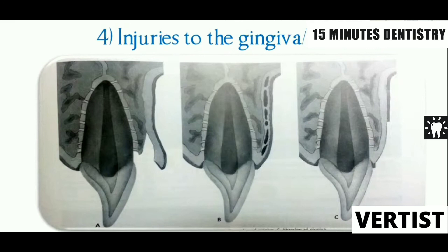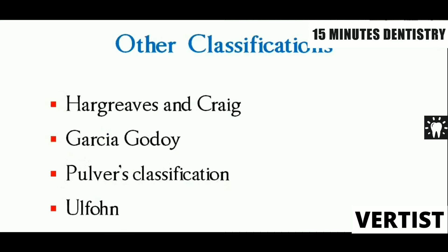That covers the Anderson classification based on the WHO system with all its codes. As for other classifications, you should at least know some names: Hargreaves and Tray classification, classification by Garstian Godoy, and classification by Pulvers and Ulforn. There are many other classifications, but knowing the two main commonly used ones and the names of several others is sufficient.